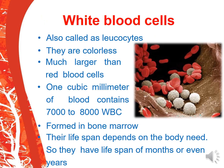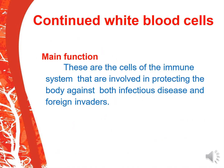White blood cells are also called leukocytes. They are colorless and much larger than RBC. Their normal value is 7,000 to 8,000 per cubic millimeter. They are formed in bone marrow. Their lifespan varies depending on body need — months or even years. The main function is that they are the cells of the immune system involved in protecting the body against infectious diseases and foreign invaders.